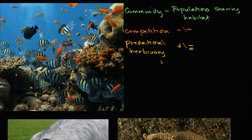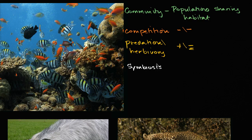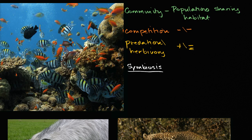The next types of interactions involve long-term, fairly intimate interactions, where organisms often live with each other or even on each other. The general term for organisms that have these long-term intimate interactions is symbiosis. Now, in everyday language, symbiosis often means organisms that benefit each other, but technically symbiosis includes cases where they hurt each other or one benefits while the other doesn't care. There are several types of symbiosis, the first being parasitism.